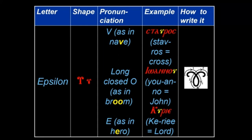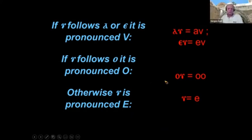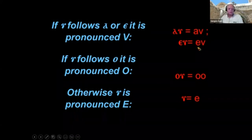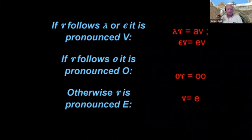Can you go back to the slide about the rules? Thank you. We'll review one more time. Epsilon after an A or an E — it's a V. After an O — it's an O. Anything else — it's an E. Just repeat that in your head a couple of times: after A or E it's a V, after O it's an O, anything else it's an E.